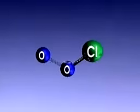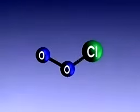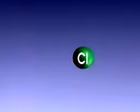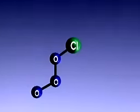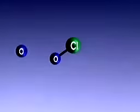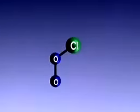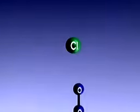Chlorine monoxide reacts easily with single oxygen atoms in the atmosphere, leaving a free chlorine atom that can destroy more ozone. Scientists estimate that one chlorine atom can destroy as many as 100,000 ozone molecules.